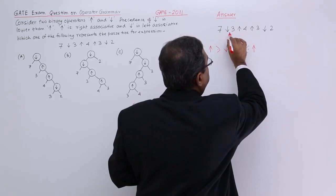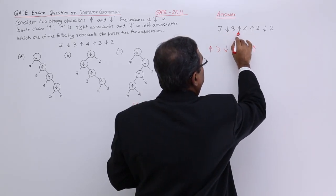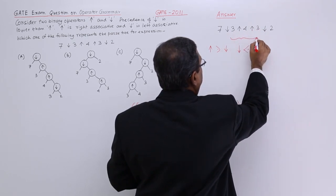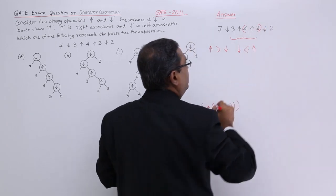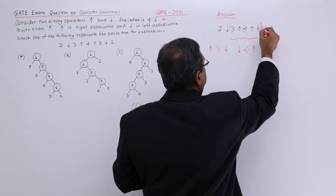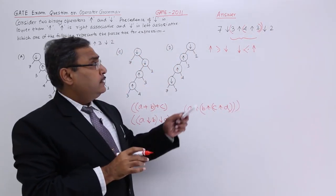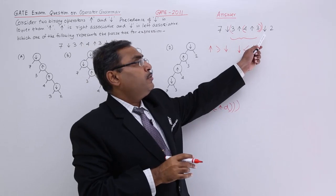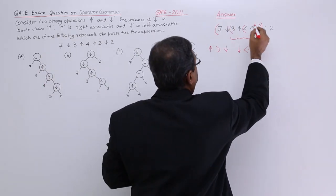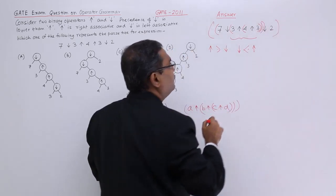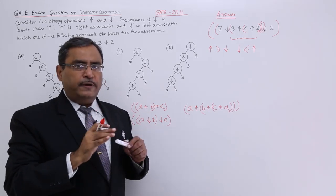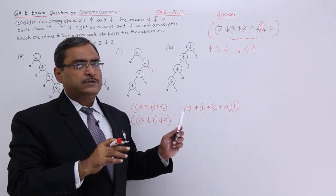If you want to evaluate this expression, because down arrow is having lower precedence than up arrow, consider this sub-expression — it is right associative, so the inner up arrow operation has to be done first, then the next. And these two down arrows are the same operator, and it is left associative, so the left one has to be done first and then the right one. That is my nesting of brackets and that will clarify which parsed tree is suitable.